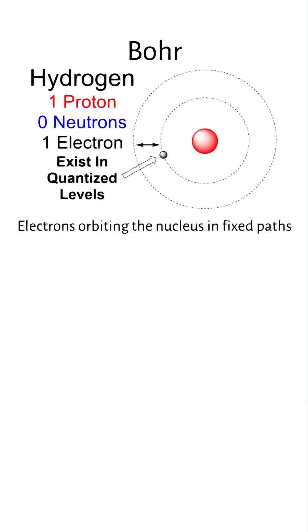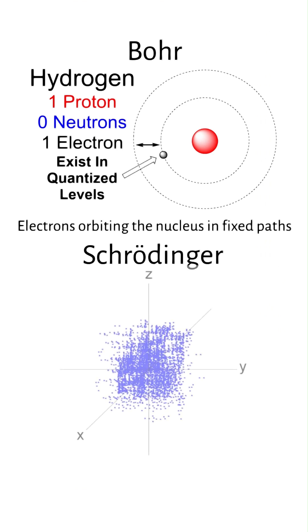Unlike Niels Bohr's model, which depicted electrons orbiting the nucleus in fixed paths, Schrödinger's approach suggests that electrons occupy three-dimensional spaces known as orbitals.